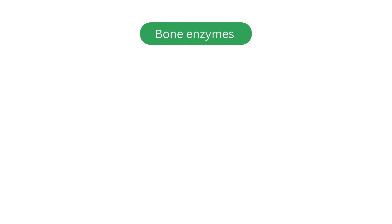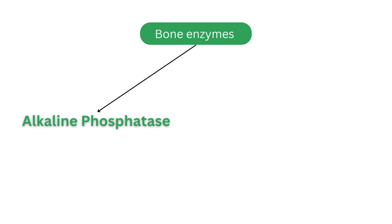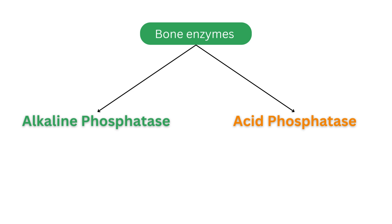Bone enzymes are specialized proteins produced by bone cells, osteoblasts and osteoclasts. These enzymes are essential for bone formation and resorption. In this video, we'll focus on two primary bone enzymes: alkaline phosphatase, specifically the bone isoform, and acid phosphatase, tartrate-resistant 5B isoform.